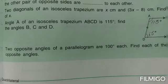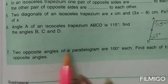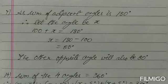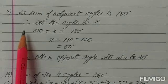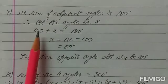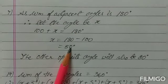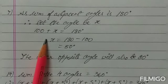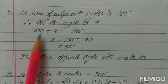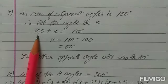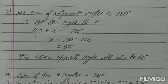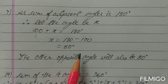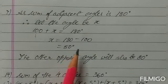Question number 7 is similar but involves a parallelogram. Two opposite angles of a parallelogram are 100 each; find the measure of the other two angles. In a parallelogram, adjacent angles are supplementary — 180 degrees. So the missing angles are 80 degrees each. Alternatively, since the sum of interior angles of a quadrilateral is 360 and two angles total 200, subtracting leaves 160, divided by 2 gives 80 degrees each.